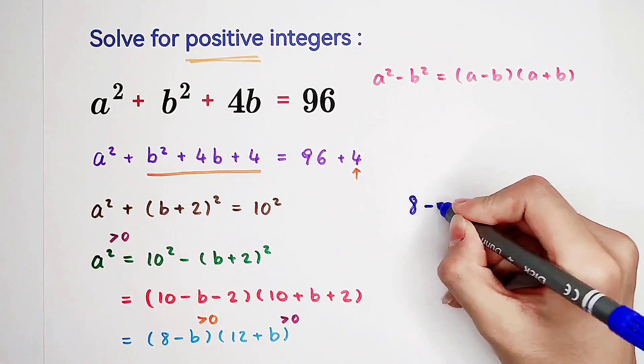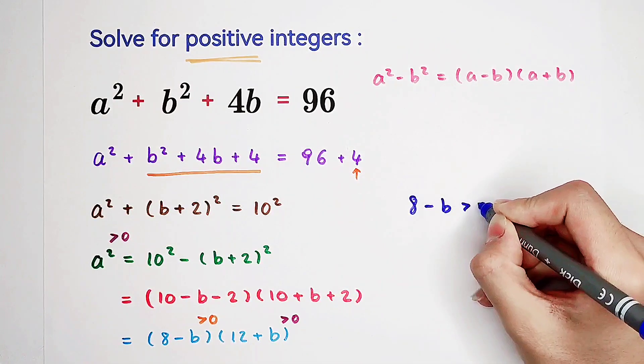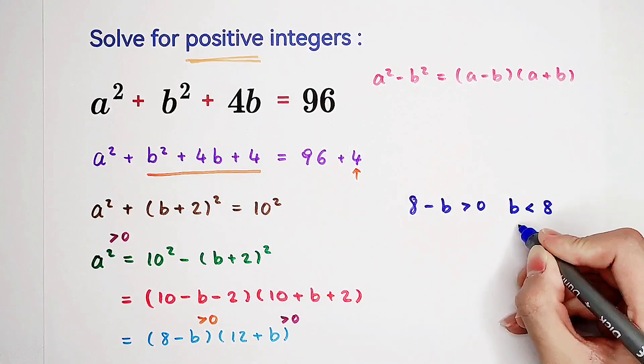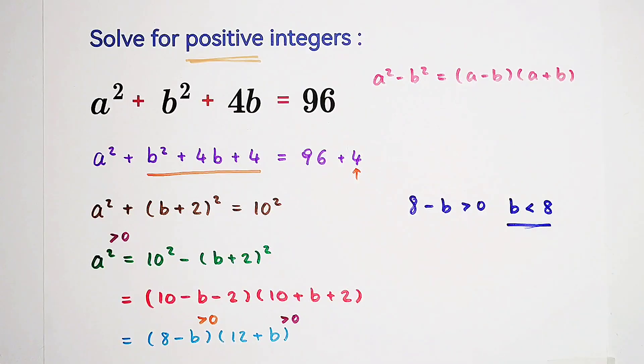So 8 minus b is positive. That means b is smaller than 8. If b is less than 8, we only get 7 cases.